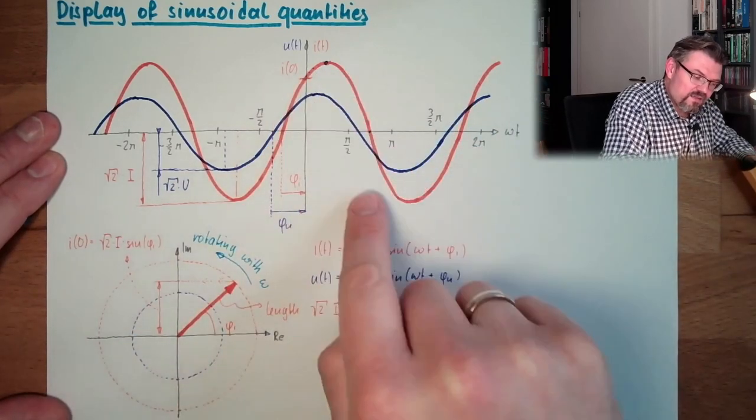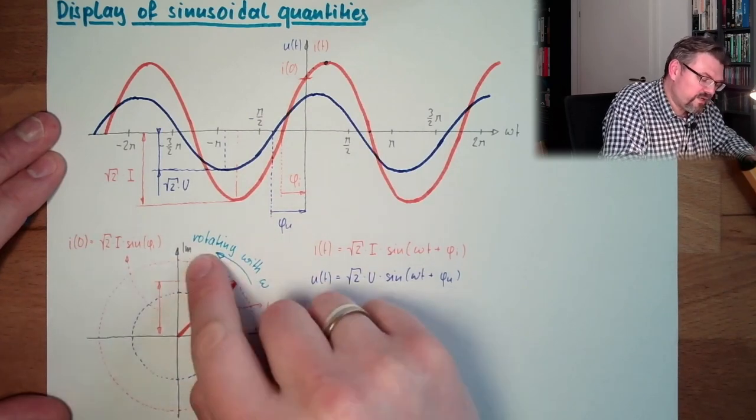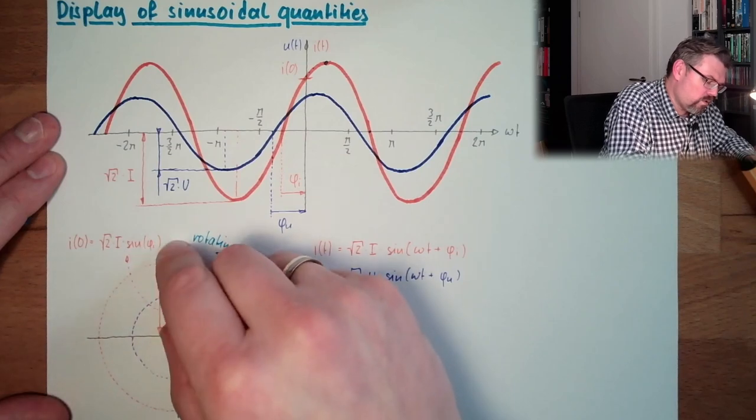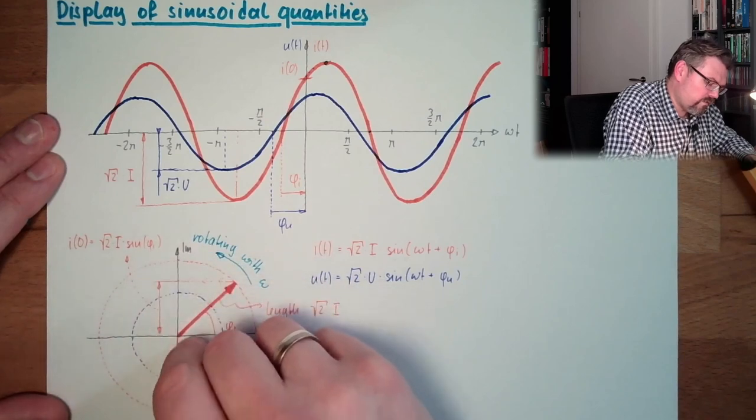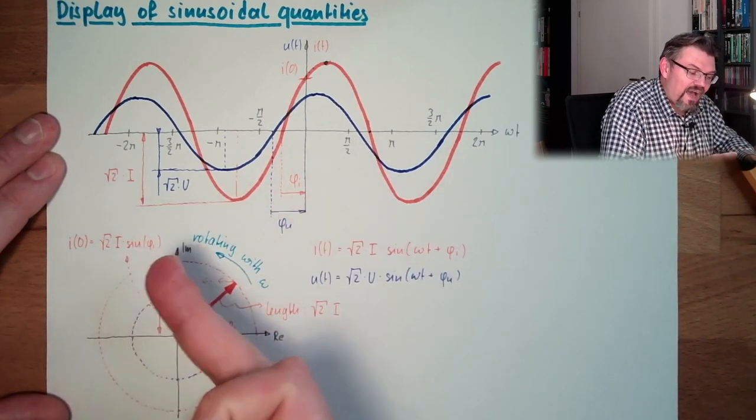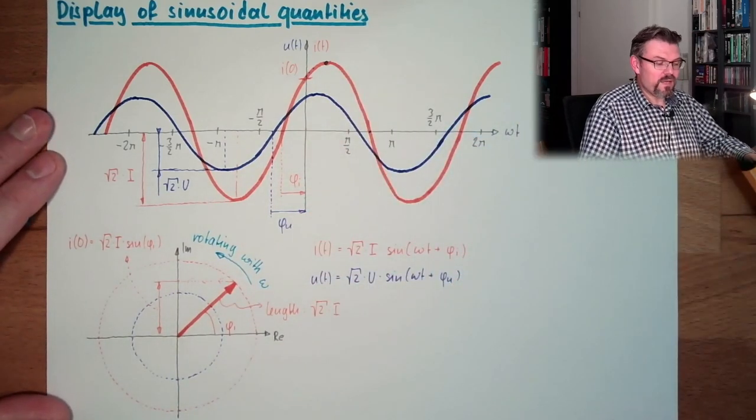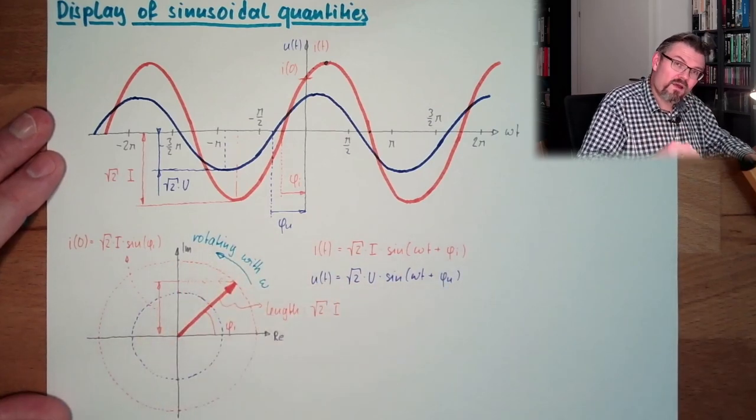So what actually, what we see here, the swing, is described by the projection of this rotating arrow, which will then grow, grow, grow, grow, grow, grow. Positive, negative, positive, negative. And suddenly I have a sine-shaped swing. Sine wave described with one arrow.